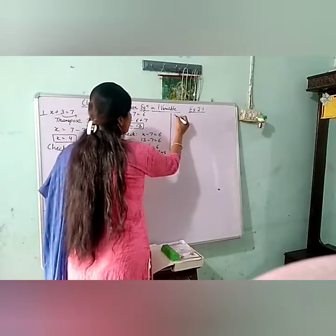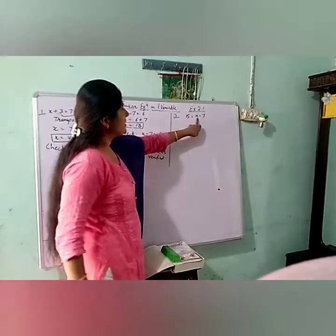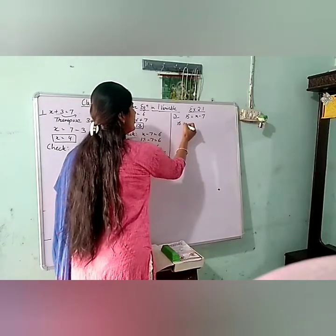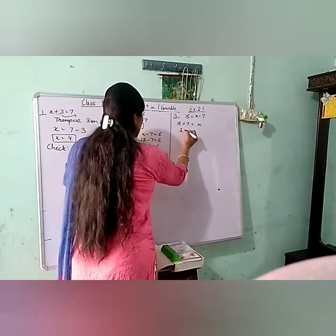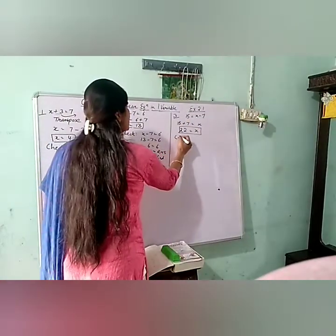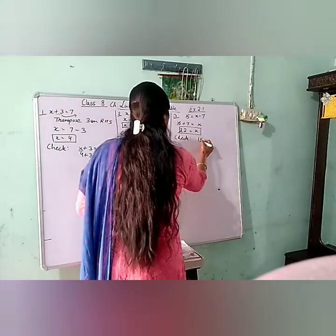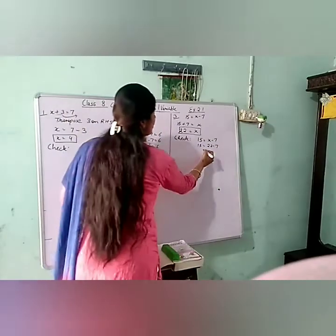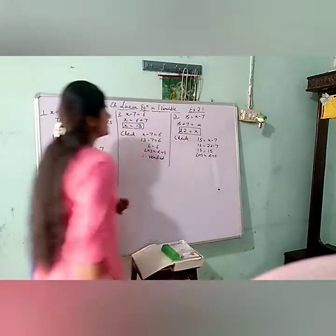Moving to the third part: 15 is equal to x minus 7. Here x is on the right hand side. Transposing minus 7 to the left, we get 15 plus 7 equals x, so x equals 22. This is the solution. Checking: 15 equals 22 minus 7, so 22 minus 7 is 15 — LHS equals RHS, hence verified.